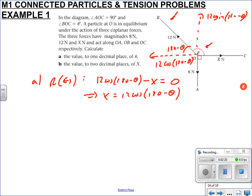If we resolve left and right, we get 12 cos(180 - θ) minus X equals 0. It wants us to find theta, but we can't at the moment because we don't know what X is, so we'll resolve up.